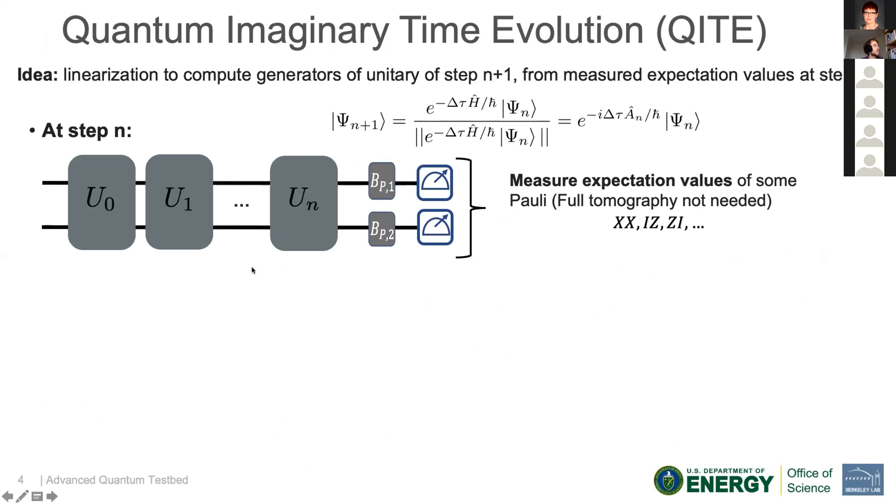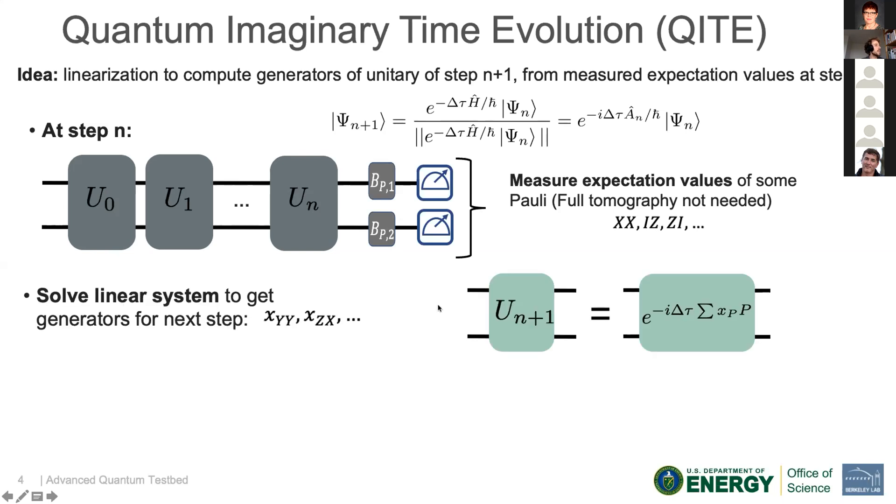So we will follow with the lines of this paper. The way they managed to mimic this non-unitary evolution is through a linearization function and solving a linear system. Basically, here for two qubits at step n, it's many unitaries which are done one after the others. At the end, we measure expectations of the XX, YZ. If there are two qubits, from this we can solve a linear system which will give us what will be the new generators for the new time step, here n plus one, which will be added.